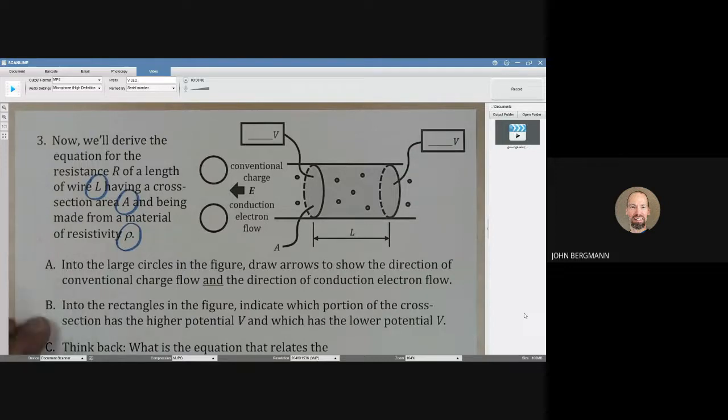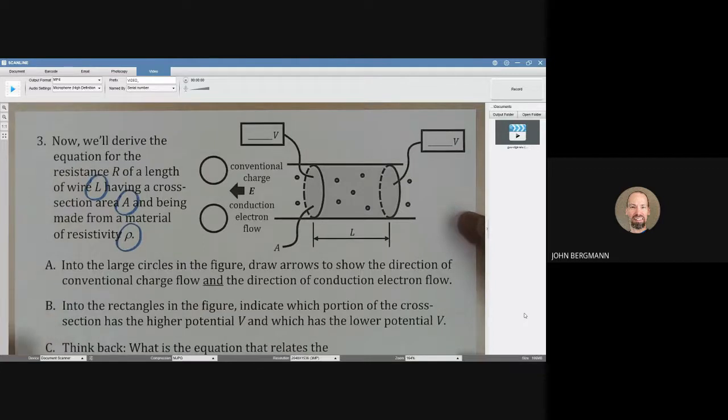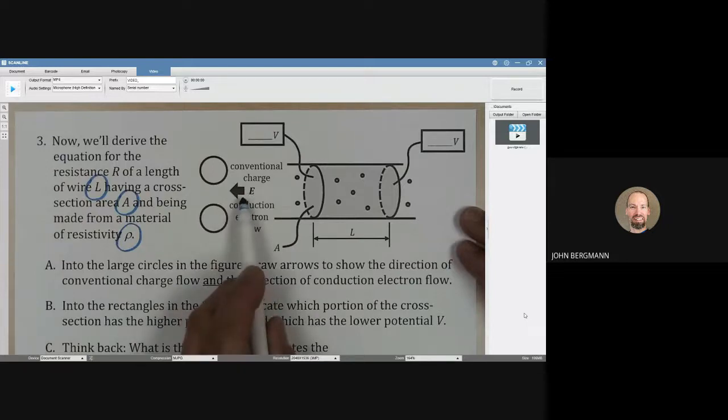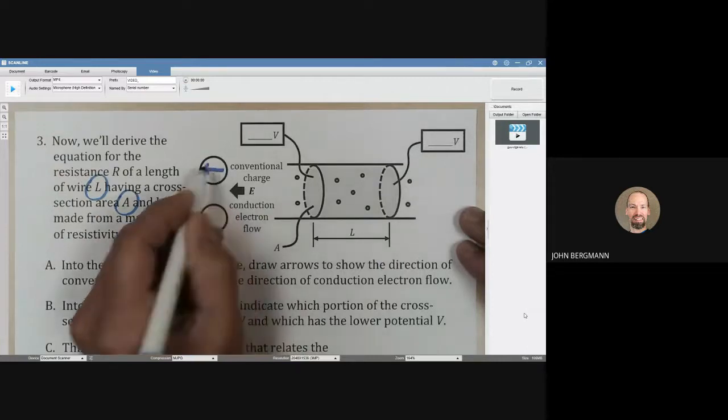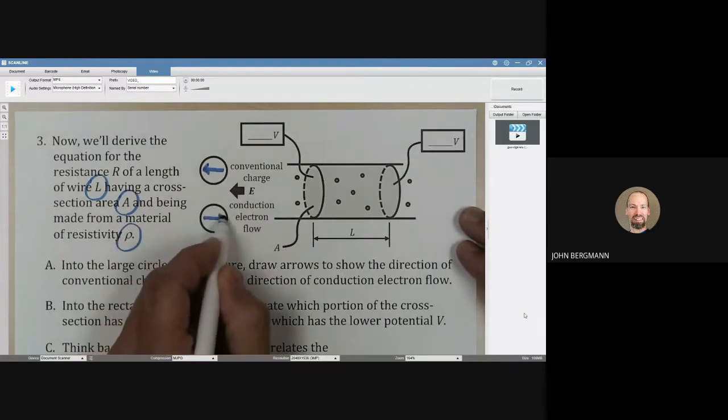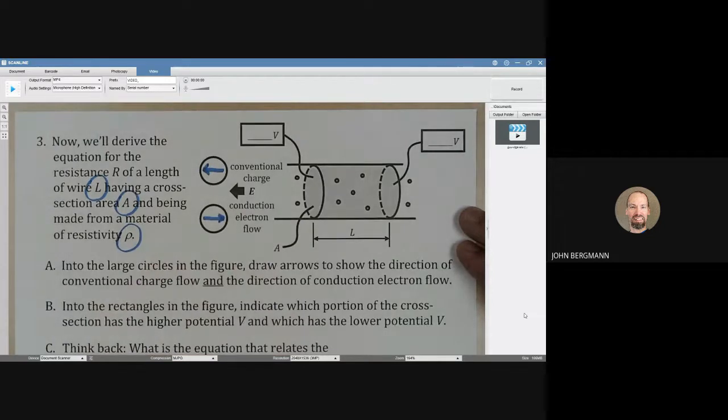Into the large circles in the figure, draw arrows to show the direction of conventional charge flow and the direction of conduction electron flow. So, if the electric field is pointing to the left, then that's the direction that conventional charges would flow. Conduction electrons would flow in the opposite direction.